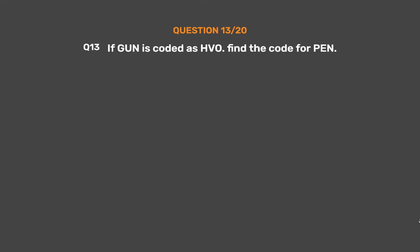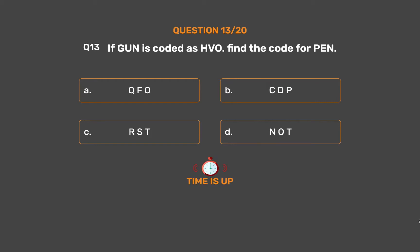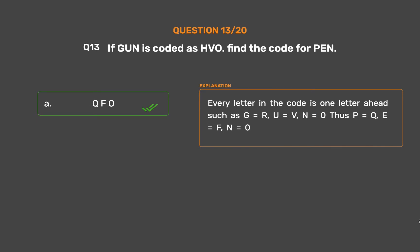Question number 13: If 'gun' is coded as 'HVO', find the code for 'pen'. Option A: QFO. Option B: CDB. Option C: RST. Option D: NOT. The correct answer is Option A: QFO. Every letter in the code is one letter ahead: G→H, U→V, N→O. Thus P→Q, E→F, N→O.